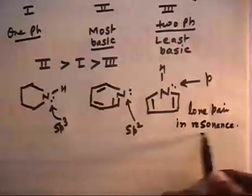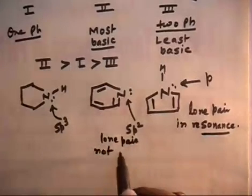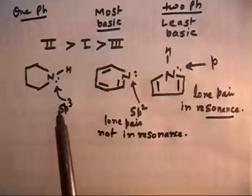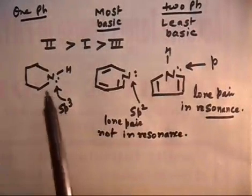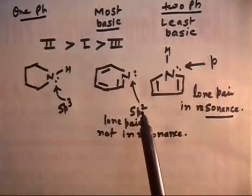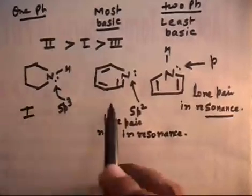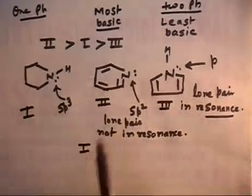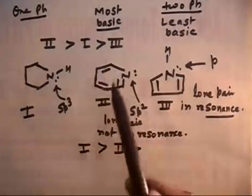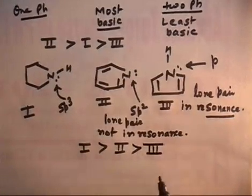Compound three has its lone pair in resonance. Compound two has its lone pair not in resonance but in an sp3 orbital, which is less electronegative, so the electron pair is more available. Compound one has its lone pair in sp2, which is more electronegative and closer to the nucleus, so it is less available. Therefore, compound two is the most basic, then compound one, and compound three is the least basic because its lone pair maintains aromaticity through resonance.